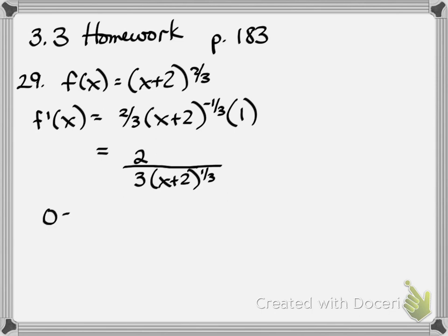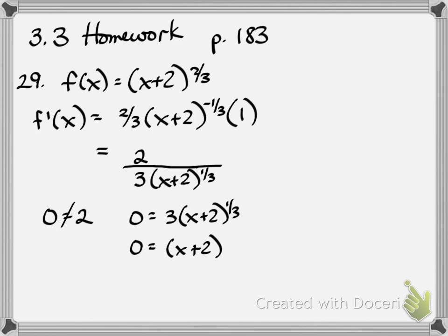Critical numbers happen where the first derivative equals zero — which doesn't give us anything here — and where the derivative is undefined, which comes from the denominator. Setting the denominator equal to zero: divide by 3, cube both sides, and subtract 2. So we have a critical number of negative 2.